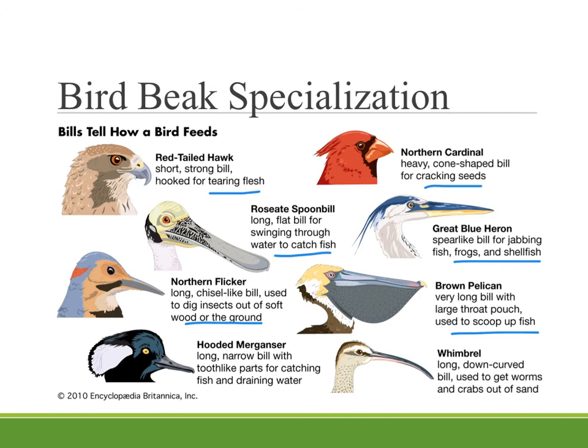So competition and predation are two types of interactions that occur between different species and different organisms within one ecosystem.